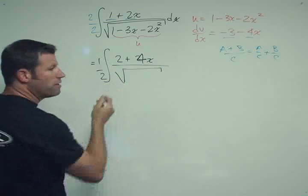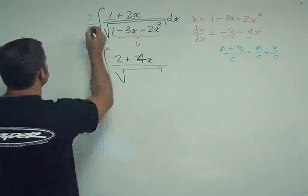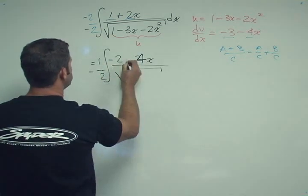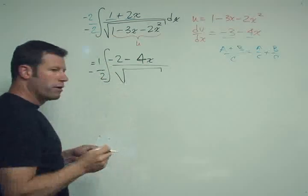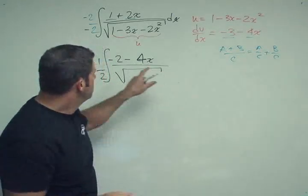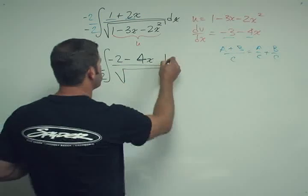But on the top we get 2 plus 4x. Right? And if I, in fact, if I were even smarter, I would multiply by minus 2 over minus 2. And then I just get a minus 1 half. And then this becomes minus 2 minus 4x. So I'm slowly getting closer to what I want. I've got the 4x term. But I have a minus 2.